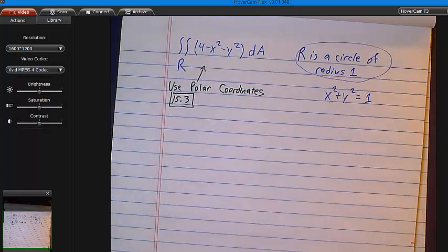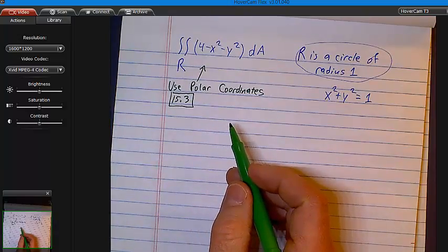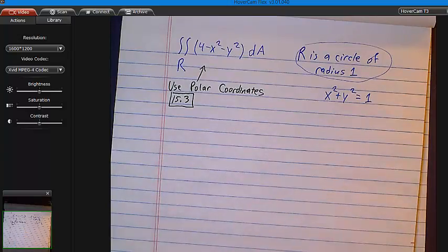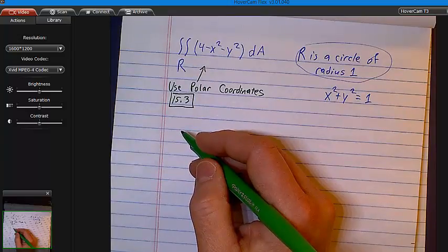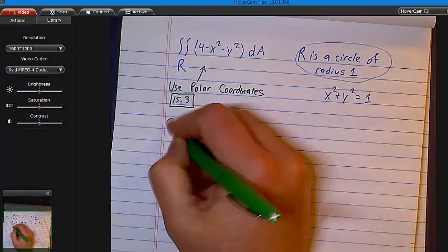You guys used polar coordinates in Calc 2, right? There were times, do you remember how that worked? You would be integrating, not with respect to x, but instead you would integrate with respect to theta. And so, that was the first time that we had really seen a different kind of Riemann sum in a way.